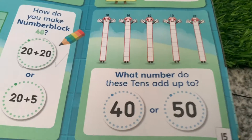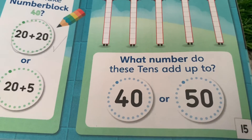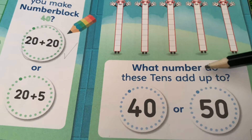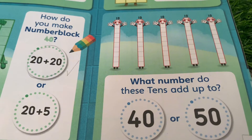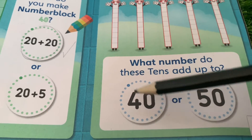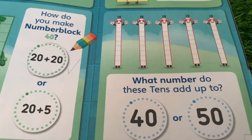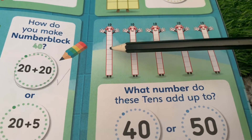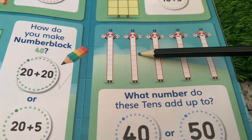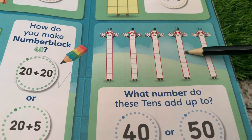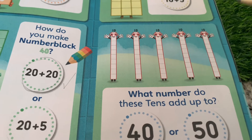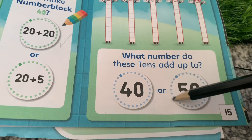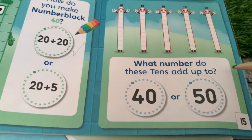We are doing great, guys. Now let's go to our last example. What number do these 10s add up to? Is it 40 or 50? Let's try to count by 10: 10, 20, 30, 40, 50. And the correct answer is 50. 5 tens is equal to 50.